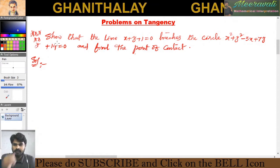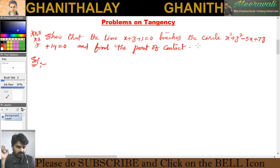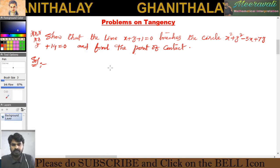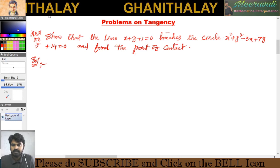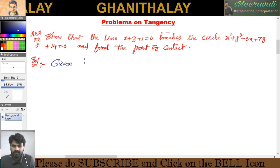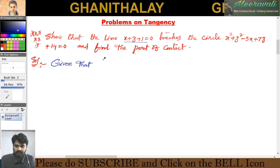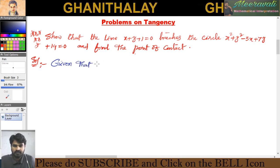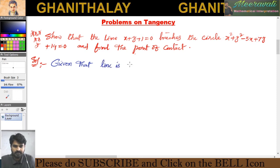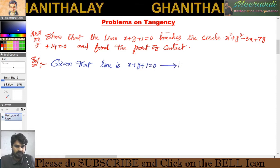Look at the problem here. Show that the line x plus y plus 1 is equal to 0 touches the circle, and find the point of contact. First you have to write what is given. The line is x plus y plus 1 is equal to 0. Let it be equation 1.